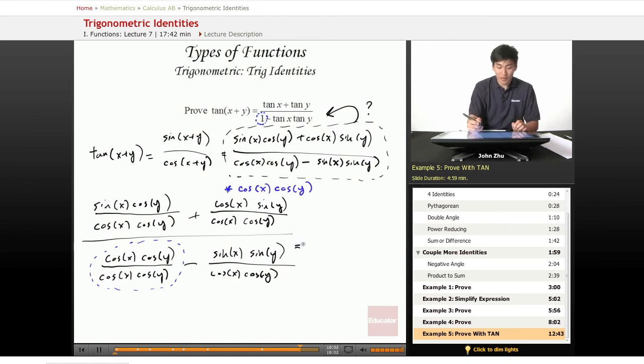Let's simplify these down. This cancels out with this. This cancels out with this. This becomes 1. And this stays the same. Although we can see that there are two terms here: sine of x, cosine of x, sine of y, cosine of y.